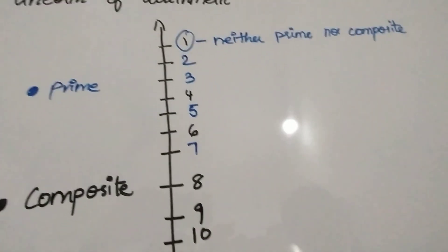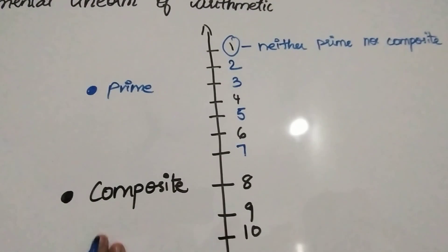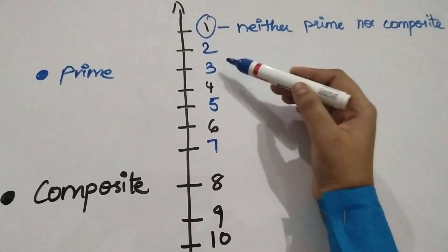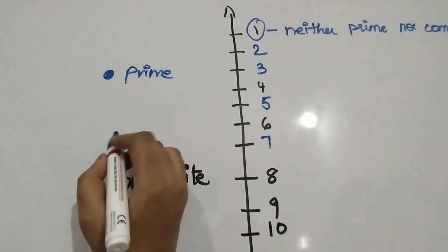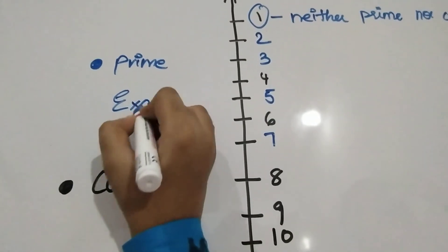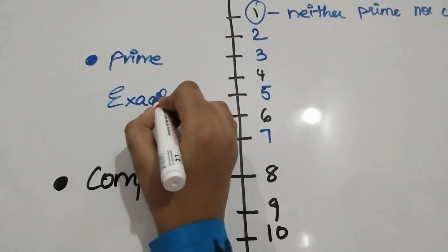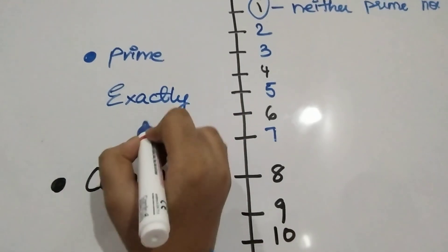So what are prime numbers? Prime numbers are 2, 3, 5, 7 and so on. So they have exactly two factors.